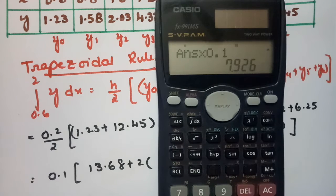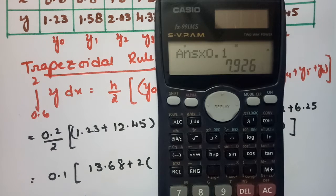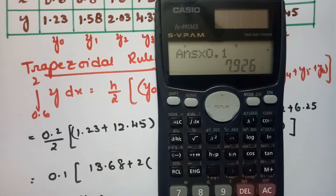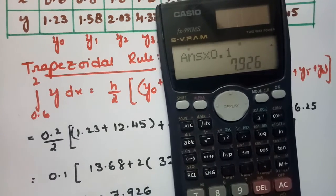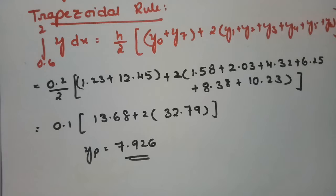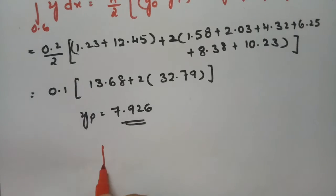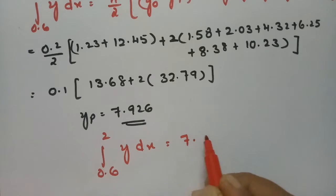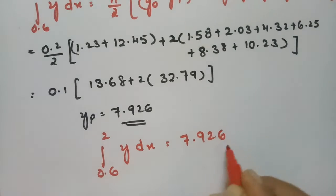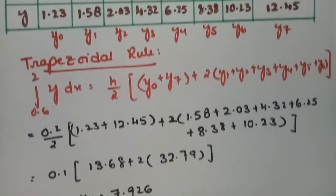The value here is 7.926. So the value for integral 0.6 to 2.0 of y dx we got as 7.926. This is how we solve the problem.